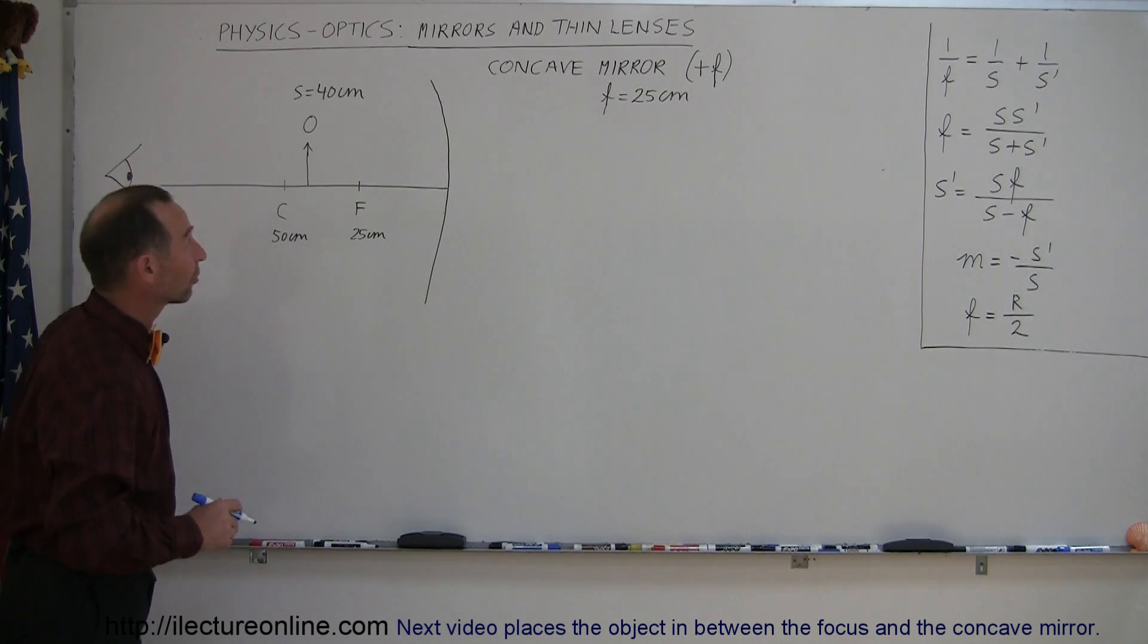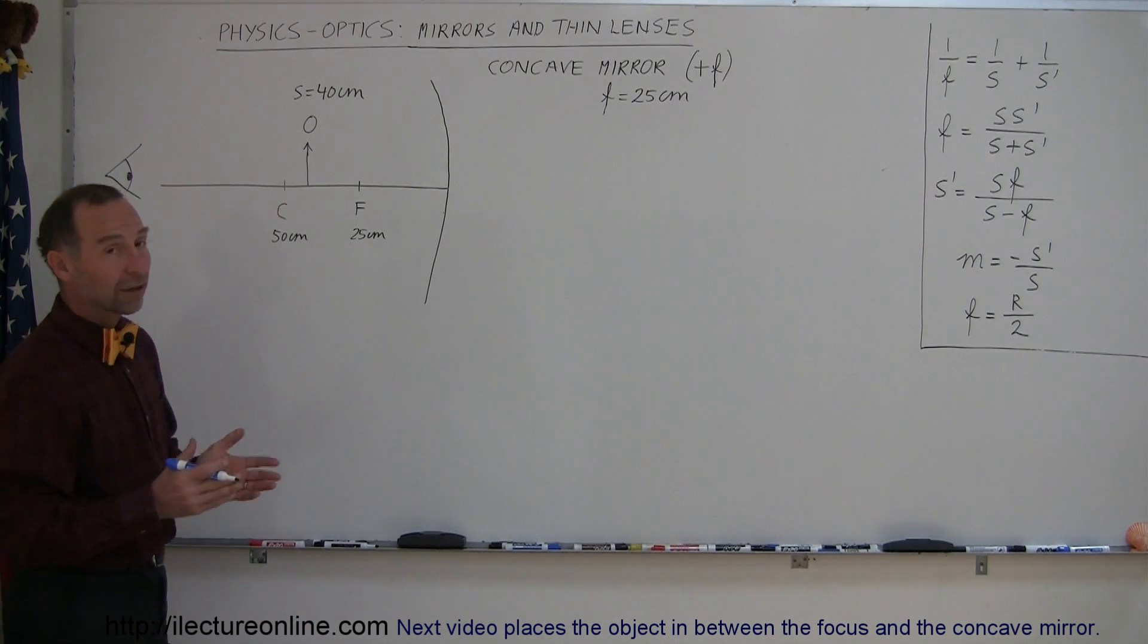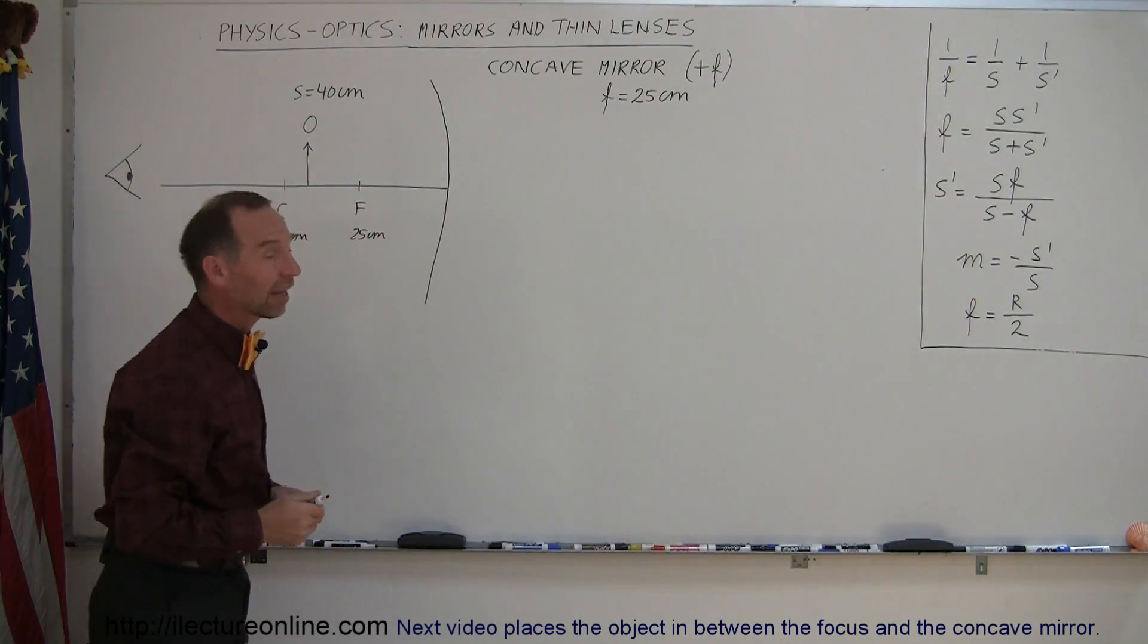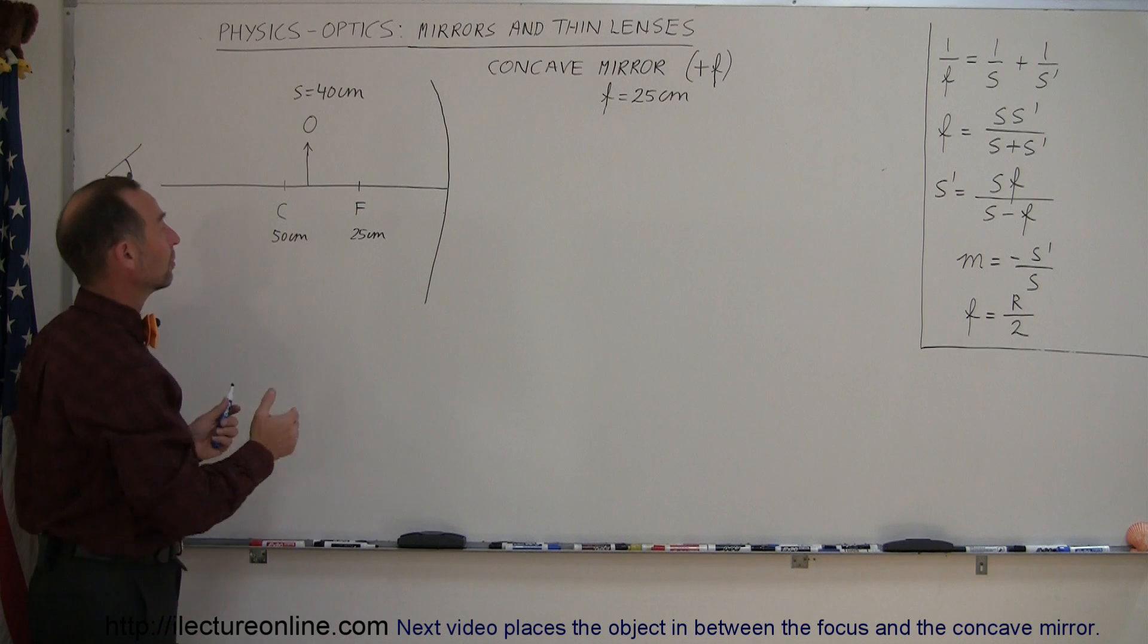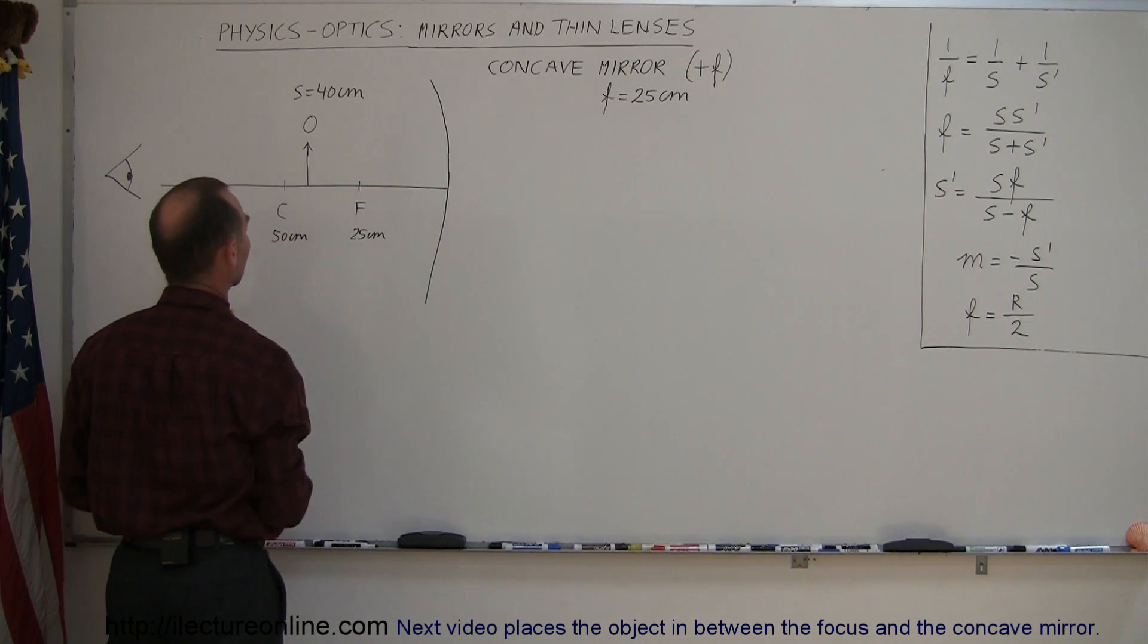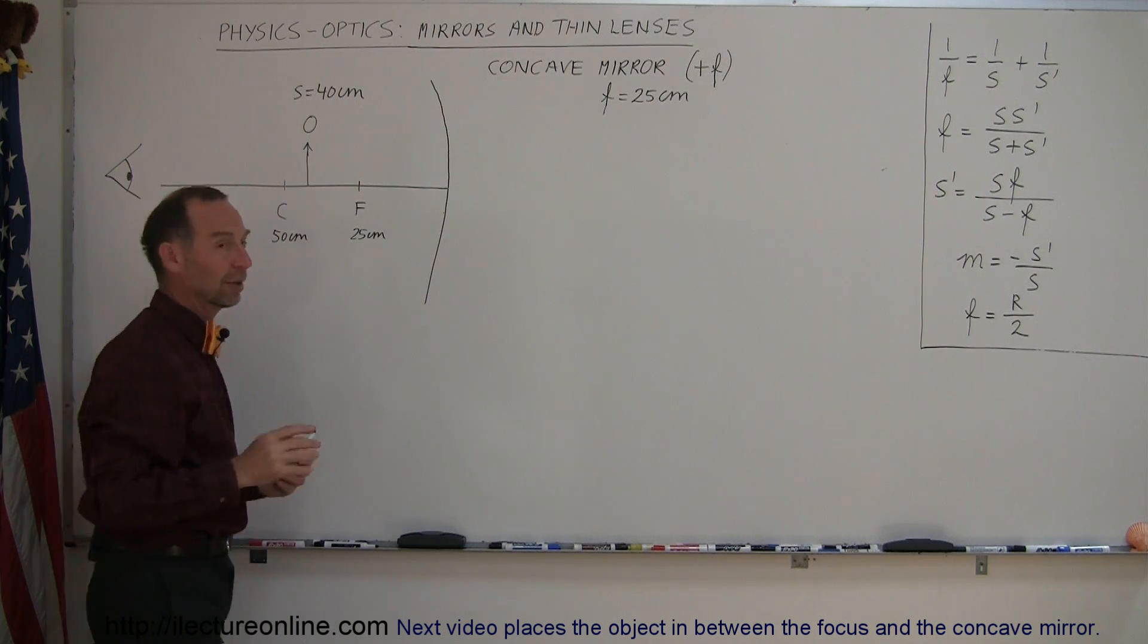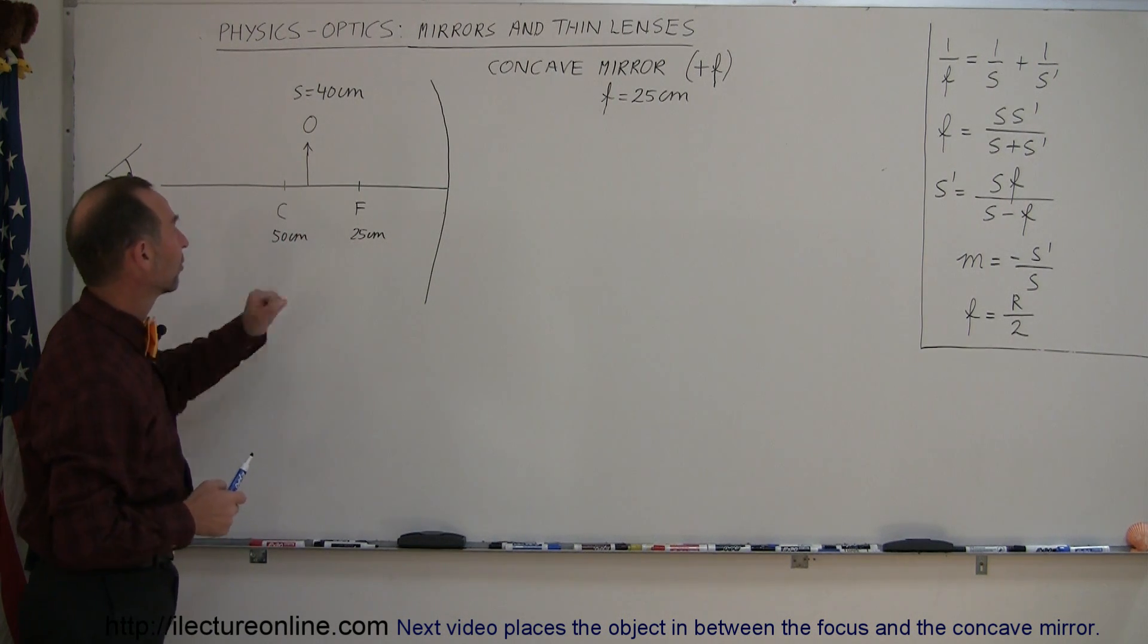Now on to our second example. It's still going to be a concave mirror. Concave mirrors have positive focal lengths, and in this case we have one that is 25 centimeters, meaning the distance from the lens to the focal point is 25 centimeters, which means the distance from the lens to the center of curvature is 50 centimeters because this is always twice this number.